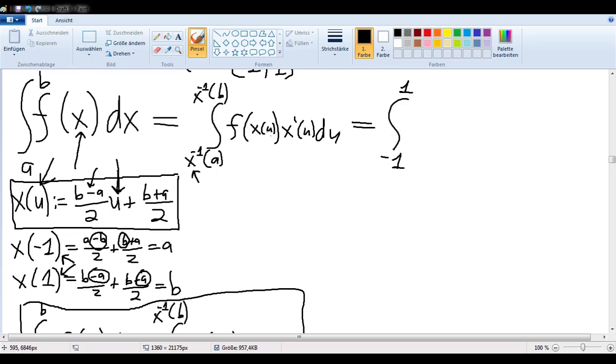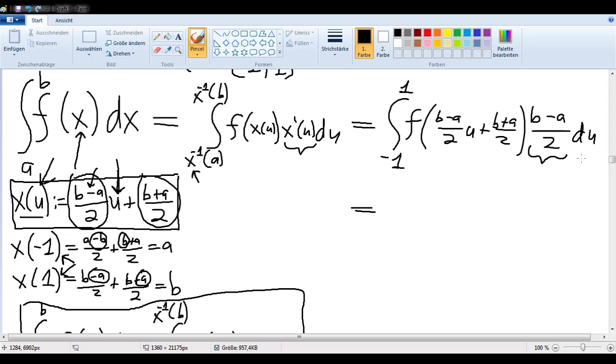Now we can sub in f of x of u. So I can just write in here f of... x of u is this here, so we can just write that in: (b minus a) divided by 2 times u plus (b plus a) over 2. And now we need to know the derivative of x with respect to u. Well, since this is a constant, it's just going to fall away. So my derivative would be that. So I have (b minus a) over 2 du. Now since this does not depend on my u, I can pull that in front of my integral.